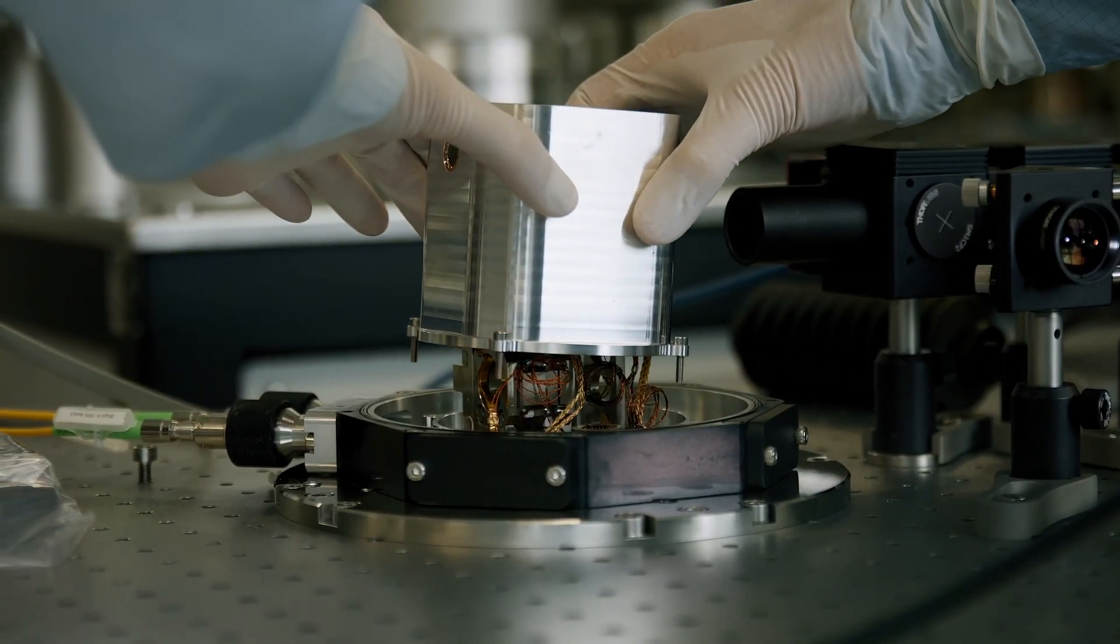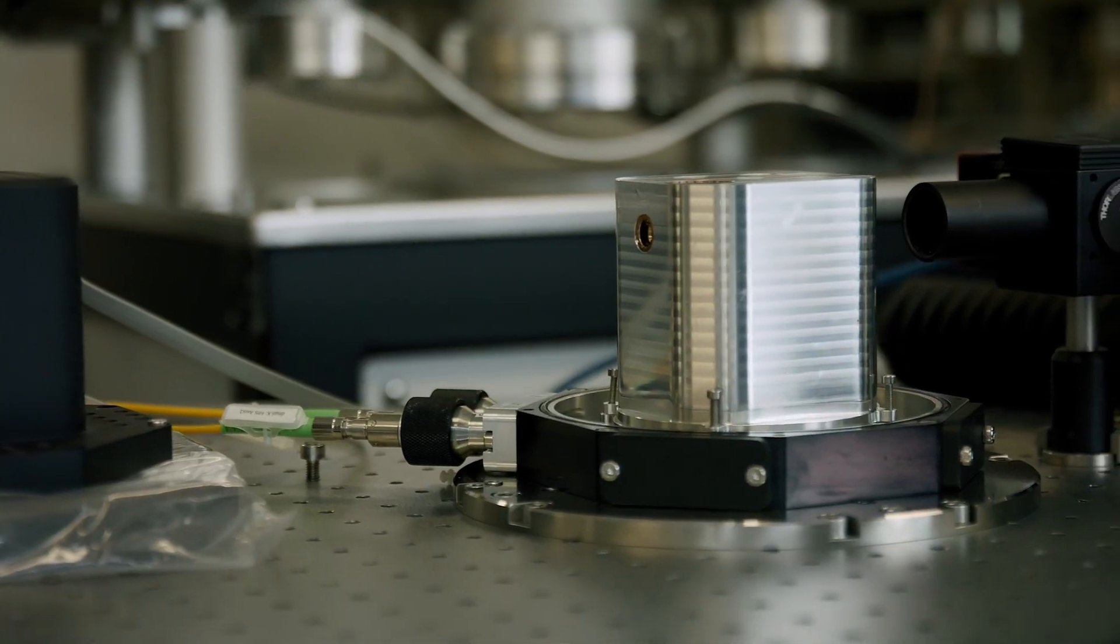Using a cryostat, we're able to probe the properties of our materials down to 4 Kelvin, which enables us to probe states of matter which are not present at room temperature.